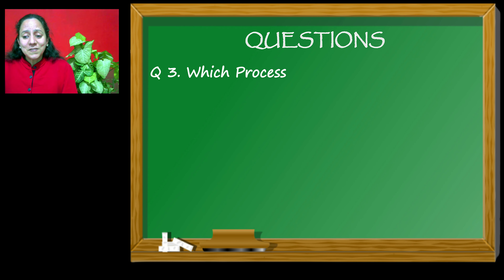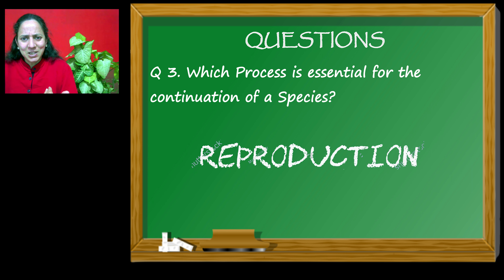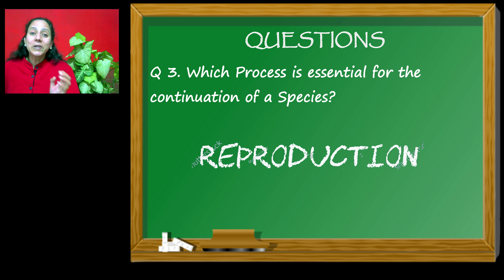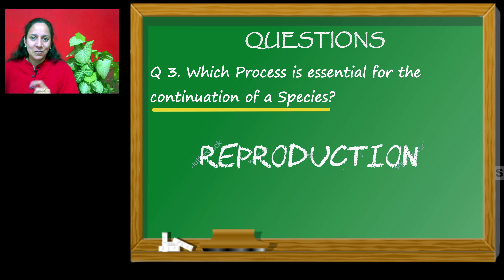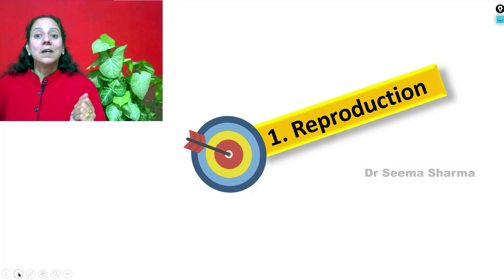Yet reproduction is very important. The answer as to why it is important lies in the next question: which process is essential for the continuation of a species on this earth? Here comes reproduction. So, reproduction is essential for the continuation of a species on this earth, and that is what you are going to explore in this video.